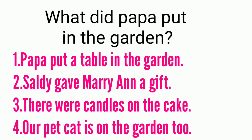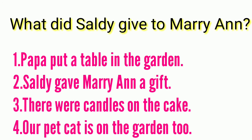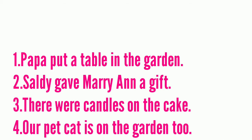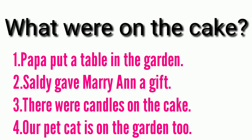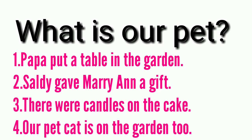Now let's answer the questions that follow. What did Papa put in the garden? A table. Number two: what did Salda give to Mary Ann? A gift. Number three: what were on the cake? Candles — there are candles on the cake. Number four: what is our pet? Our pet is a cat.